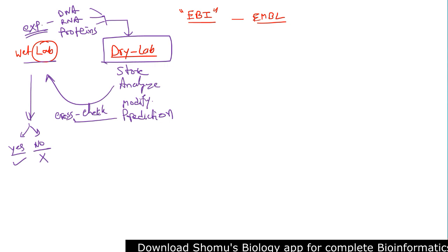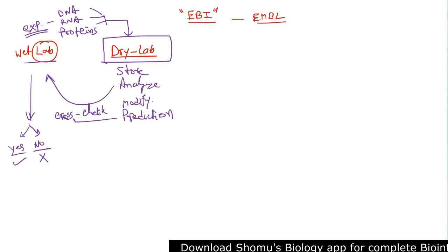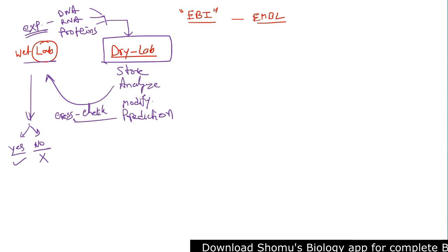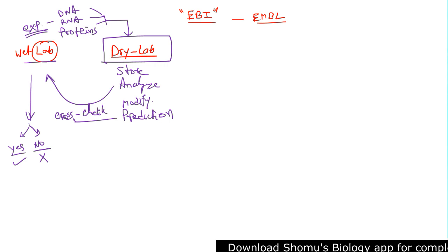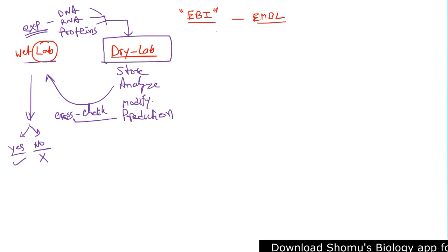We can understand how an organism behaves. Earlier, we would decide everything based on morphology and appearance. But nowadays, phenotype doesn't matter — everything that matters is the genotype, how it's actually made up. And everything is possible with this crosstalk of wet lab and dry lab.